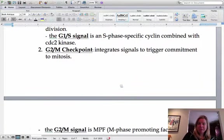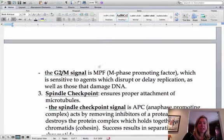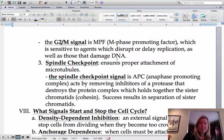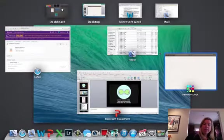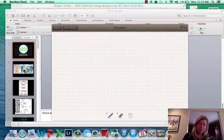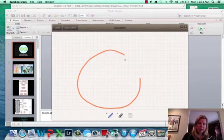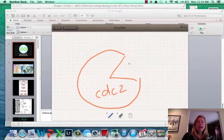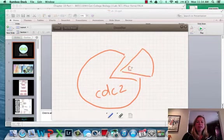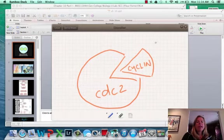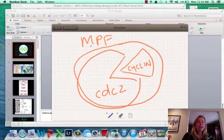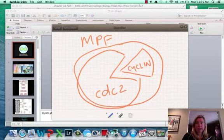Then we're going to go on to the G2M checkpoint. So remember, this is going to be the part where it's going to check that DNA was copied correctly. So what we call this one is MPF. What has to happen is we have our CDC2 and that has to combine with another type of cyclin. And all together, this whole thing is called MPF, stands for mitosis promoting factor. Because right after this is when mitosis can actually go through. So mitosis promoting factor is going to be what this is called, and this happens as a result of the DNA being copied correctly.